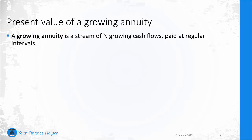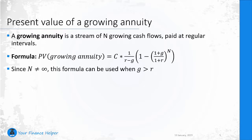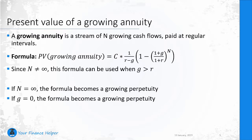A growing annuity is a stream of n growing cash flows paid at regular intervals. The formula is quite similar to the present value of a standard annuity. There is a reason why n is not equal to infinity — this is how we define an annuity. Since n is finite, this formula can be used even when the growth rate is higher than the interest rate. If n is infinite, the formula turns into a growing perpetuity; and if the growth rate is equal to zero, the formula also becomes a standard perpetuity.